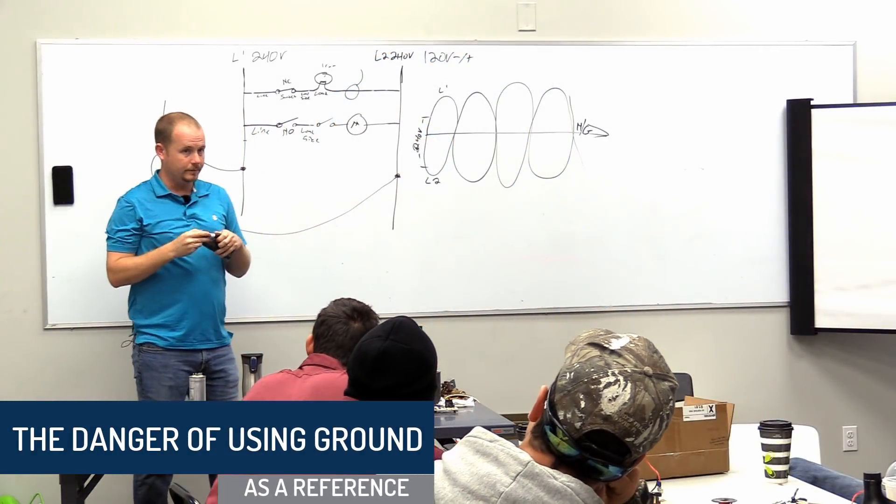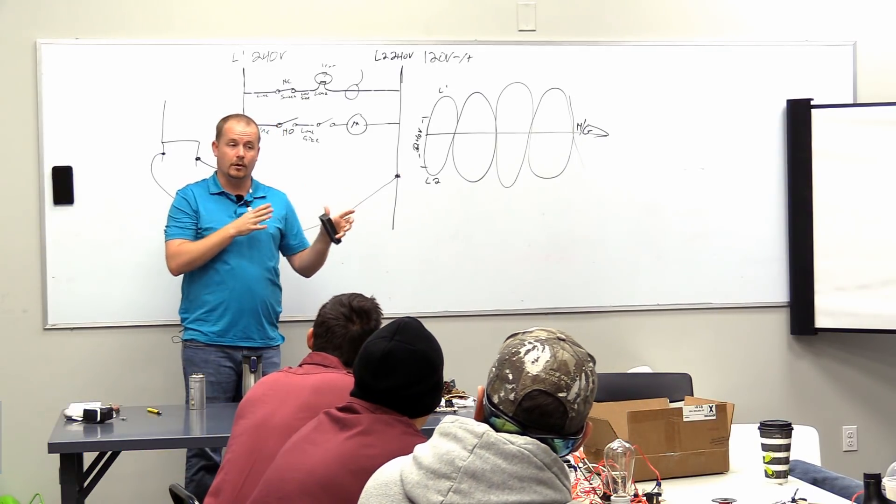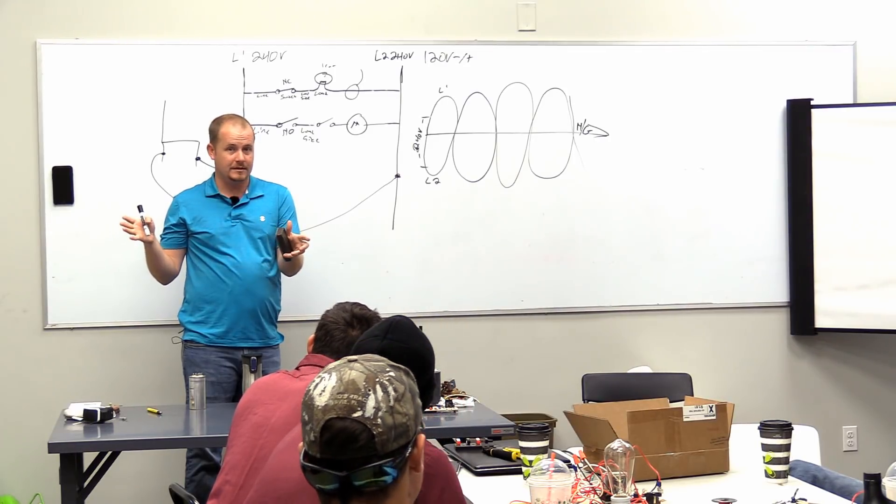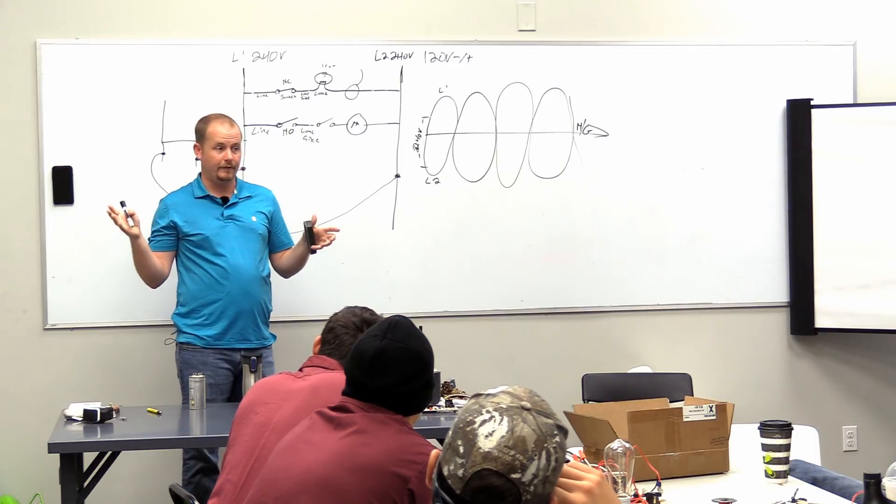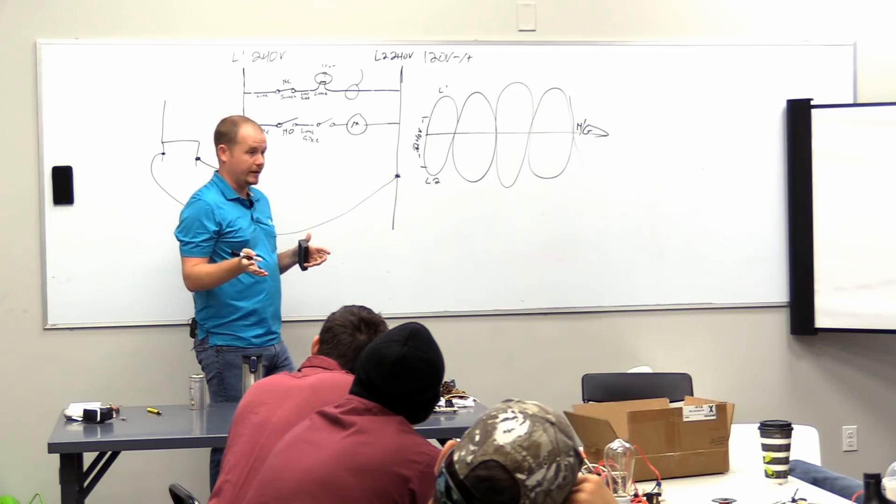Now does a 240 volt circuit have a neutral? Does it? No. Now are there some 240 volt appliances that do have a neutral? What's an example of one? Dryer, range. They will have a neutral and that's because there are certain 120 volt components in it, right?